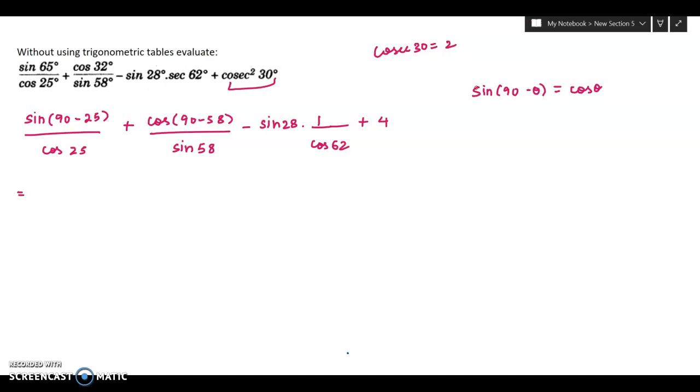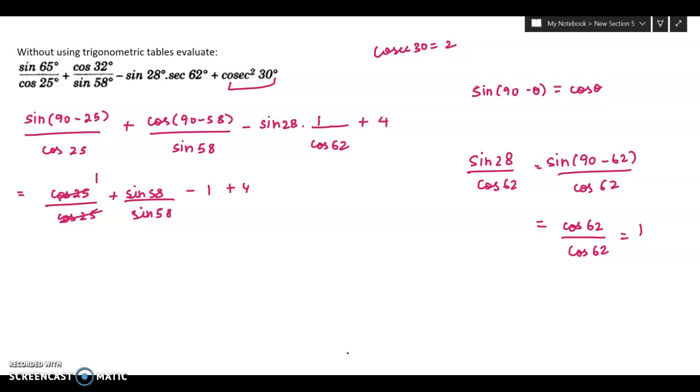Now sine 90 minus 25 is cos 25 by cos 25. Then cos 90 minus 58 will be sine 58. And sine 28 divided by cos 62. I can write this as sine 90 minus 62 divided by cos 62. So sine 90 minus theta is cos theta. This will be 1 minus 1 plus 4. 1 plus 1 minus 1 plus 4. That will be 6 minus 1 equal to 5.